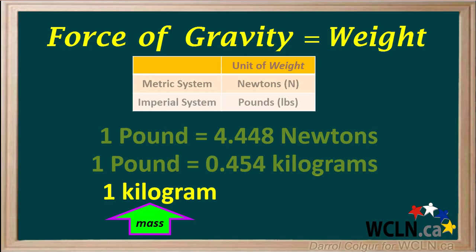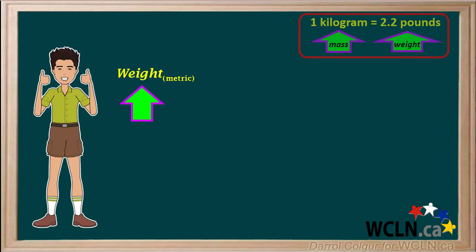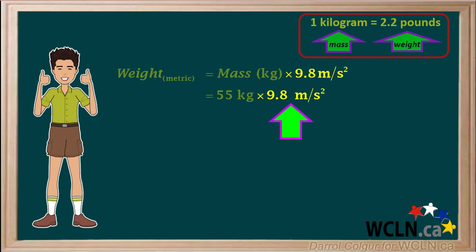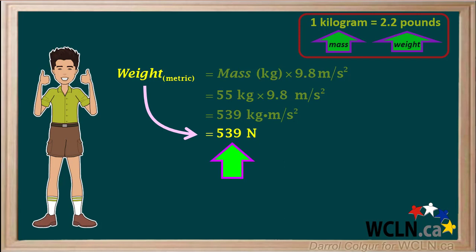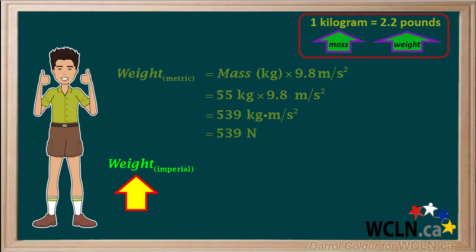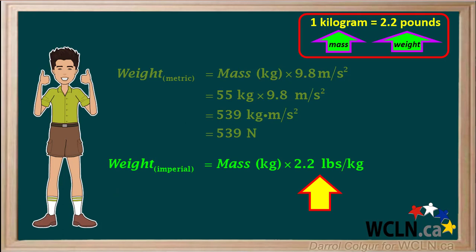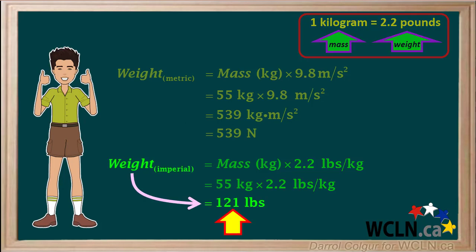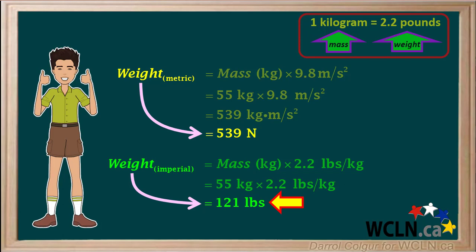Or we can say that a mass of one kilogram gives us a weight of 2.2 pounds. To calculate the weight of our boy in the metric system, we take his mass in kilograms and multiply it by 9.8 meters per second squared: 55 kilograms times 9.8 meters per second squared equals 539 newtons. To find the weight in imperial units, we take 55 kilograms and multiply it by 2.2 pounds per kilogram, which gives the boy an imperial weight of 121 pounds. So the boy's weight in metric units is 539 newtons, and in imperial units is 121 pounds.